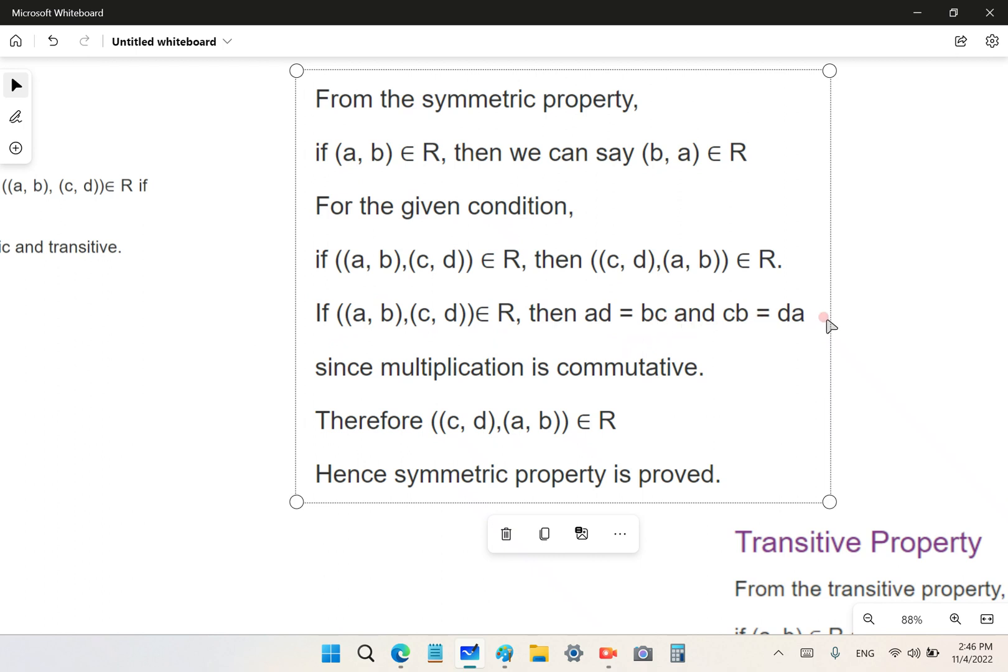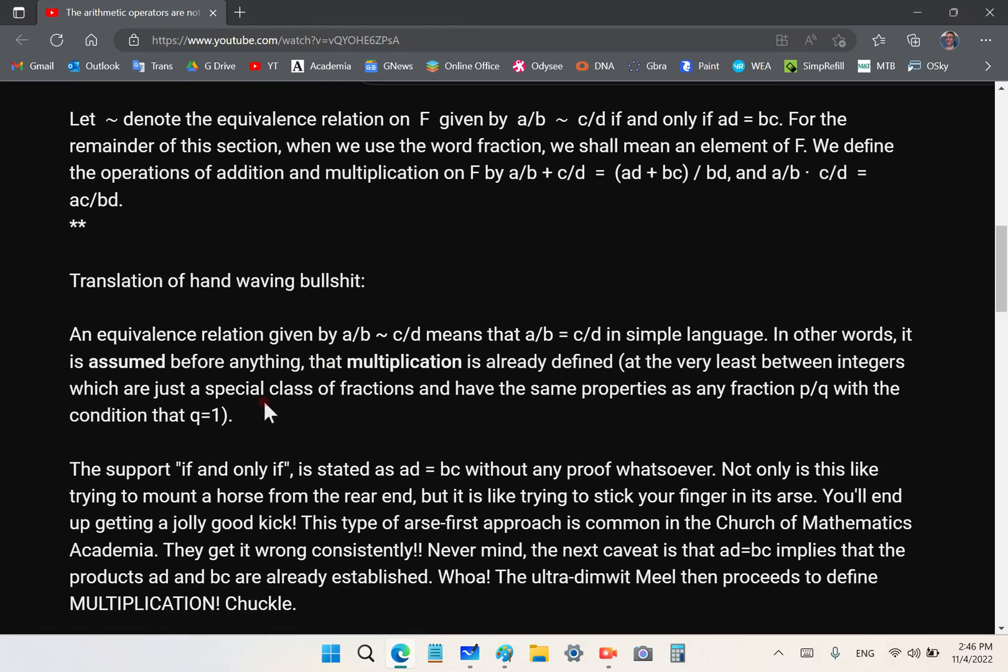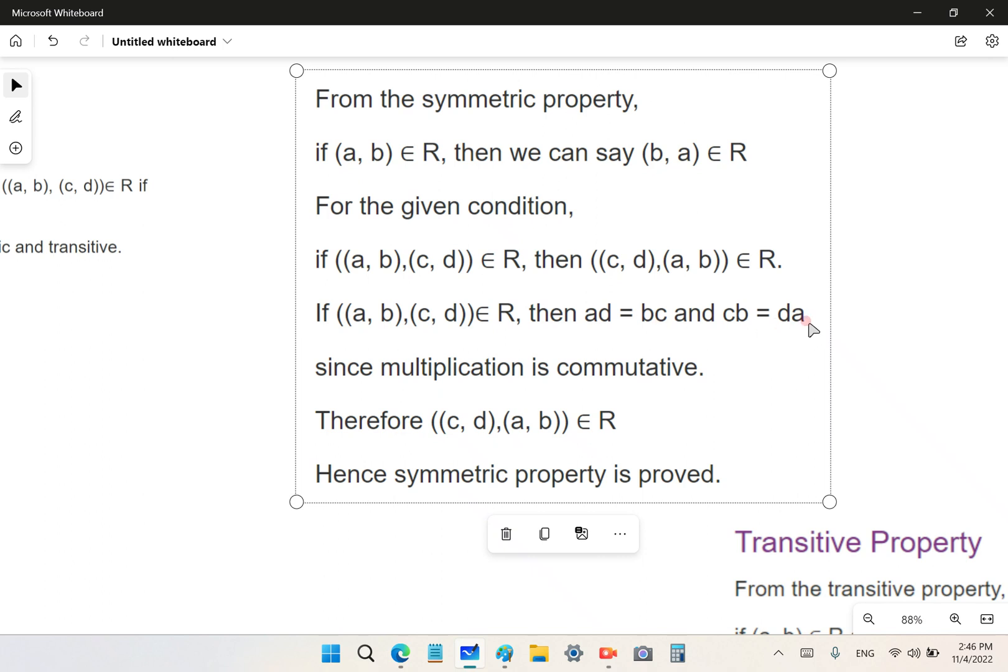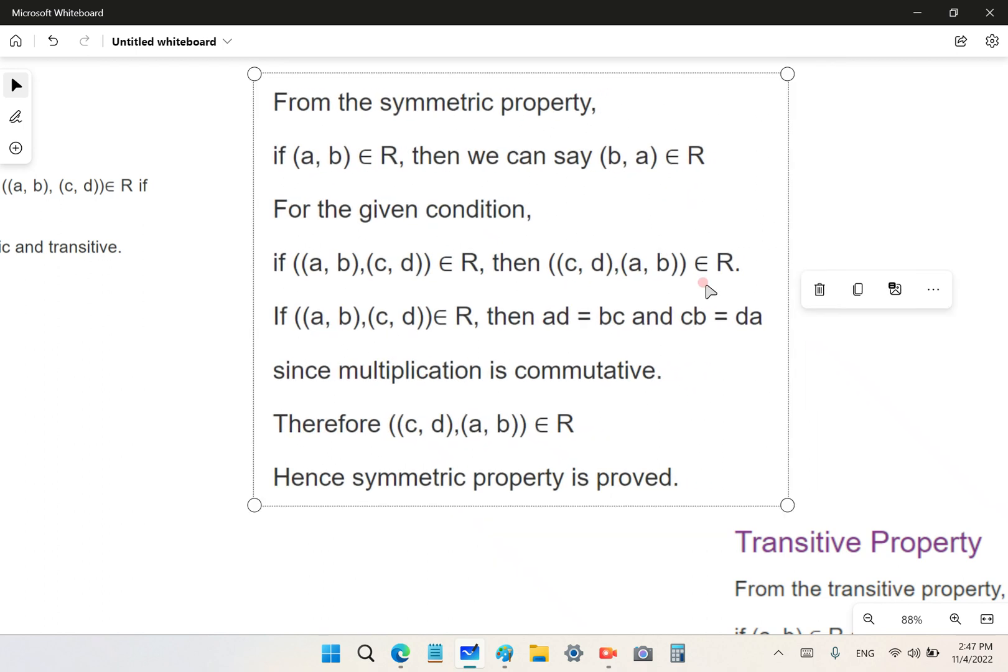It says, if the ordered pair is an element of R, then AD is equal to BC and CB is equal to DA. These things here were assumed. There's nothing. Since multiplication is commutative. Now note that blundering idiot, David Meel in his article was saying that we define the operations of addition and multiplication on F by this relationship, by this equivalence relation. So in other words, he already assumed it. There's nothing to be done there. So since multiplication is commutative, if I had a dollar for every time these blundering fools said associative, commutative, distributive, I'd be a millionaire because none of that is actually even relevant in mathematics. Believe me, it's a bunch of garbage. And of course, then the conclusion here is hence symmetric property is proved.